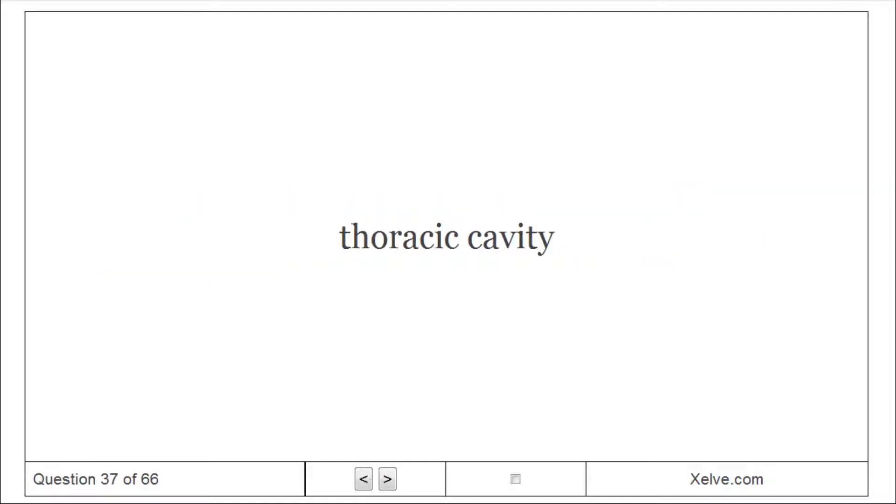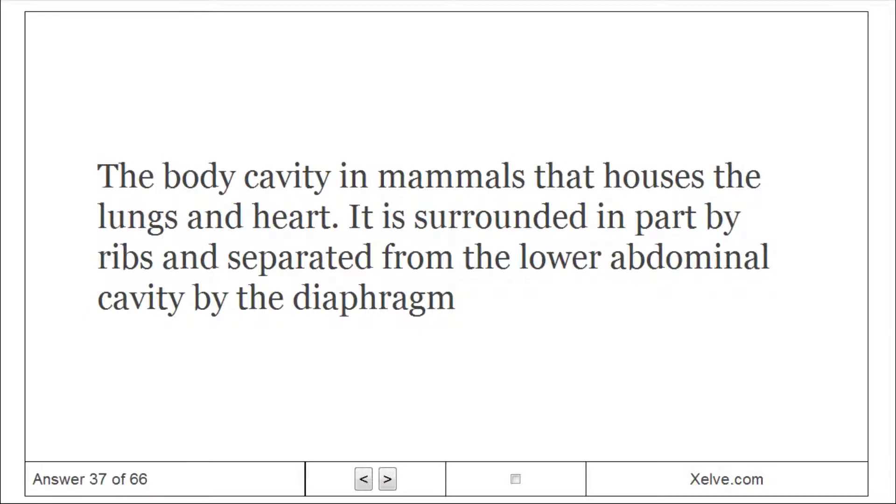Thoracic cavity: The body cavity in mammals that houses the lungs and heart. It is surrounded in part by ribs and separated from the lower abdominal cavity by the diaphragm.